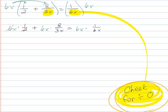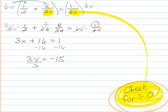Let's see, these cancel out and give me 3. So I've got 3x plus, the x's are going to cancel, the 3 and the 6 are going to cancel with 2. So 2 times 8 is 16. And that's going to equal, those cancel out and I'm only left with a 1. Subtract 16 from both sides. And divide by 3. And that'll give me negative 5.